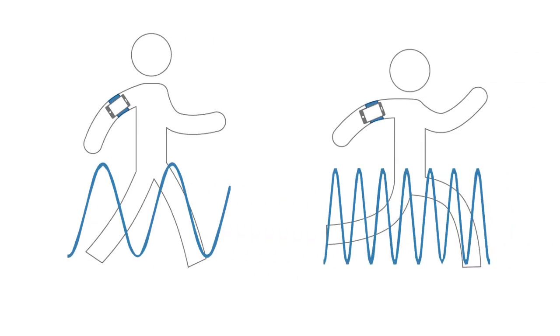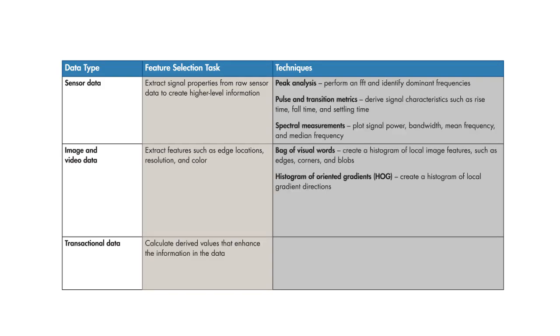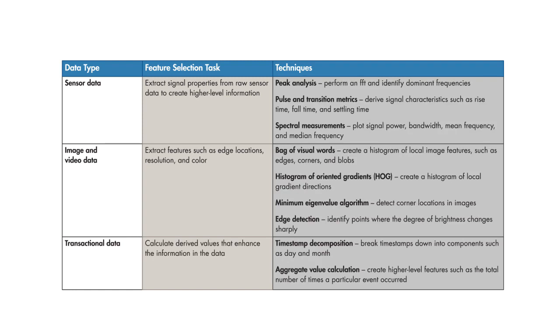These features will help the algorithm distinguish between walking, which is low frequency, and running, which is high frequency. We create a new table that includes the selected features. The number of features that you could derive is limited only by your imagination. However, there are a lot of techniques commonly used for different types of data.